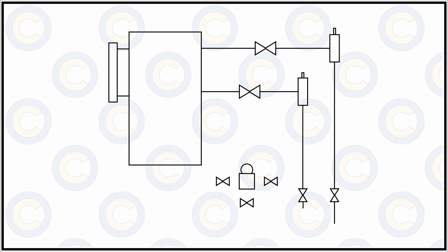As we know in the DP cell or the DP transmitter, one side of the connection is the low pressure side and the other is the high pressure side.